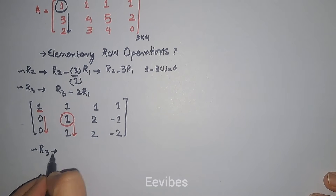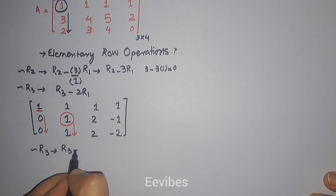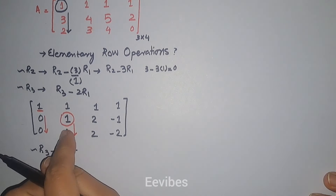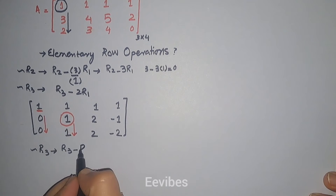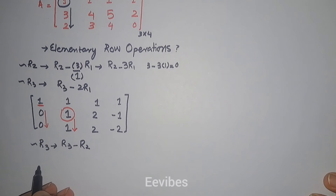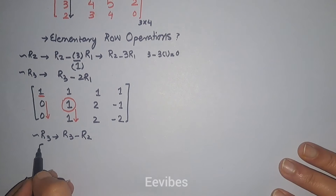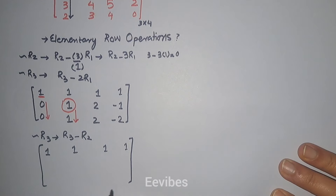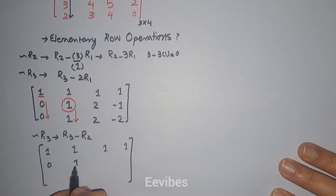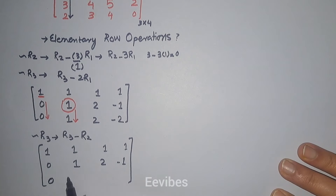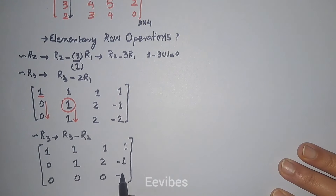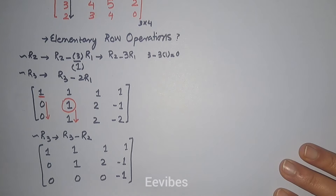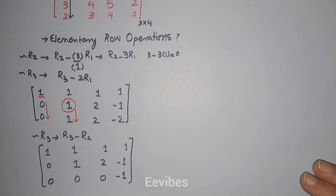The change in R3 is R3 minus one divided by one, which gives R3 minus R2. The resultant matrix has the first row as it is, the second row is zero, one, two, minus one, and then zero minus one gives zero, two minus two gives zero, while minus two plus one becomes minus one.